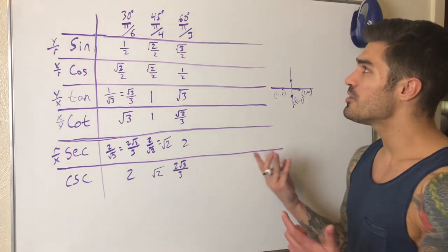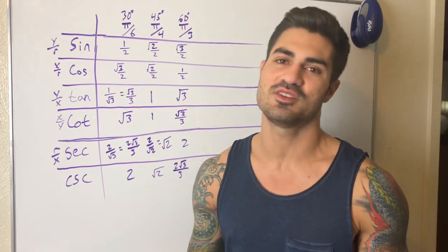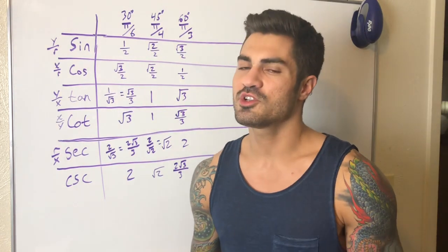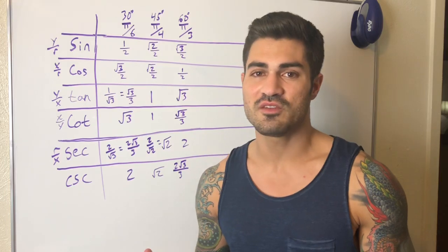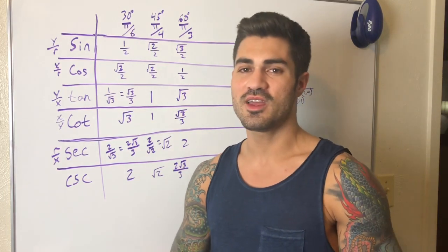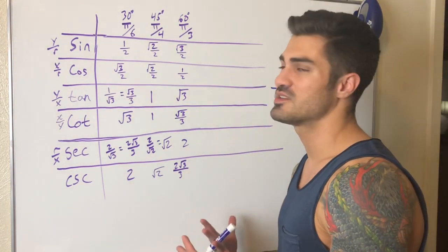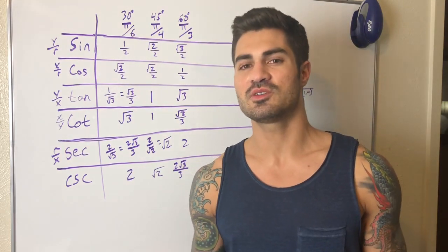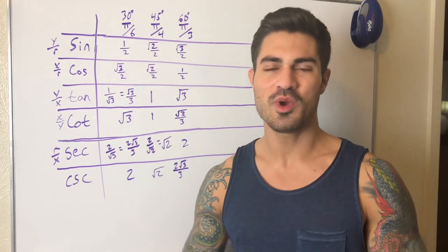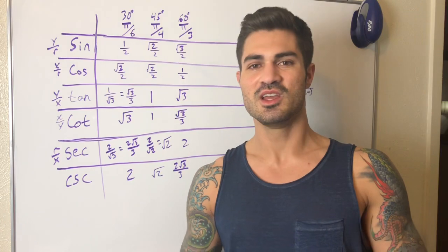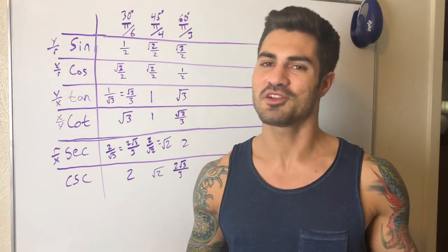What about other angles like 11π/6 or 7π/4? That's when reference angles come into play — I'll have to cover that in another video since it's a whole other topic. But if you know the reference angle and the quadrant the angle is in, you can find the exact value using this same table. This really changed my world when it comes to trigonometry — way less stress when you don't have to memorize everything on exams.